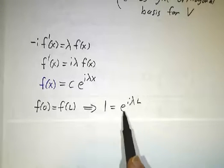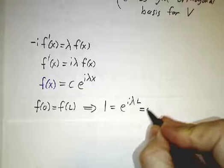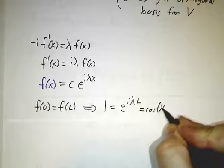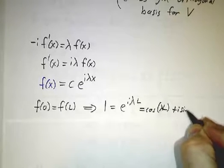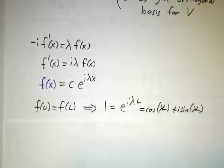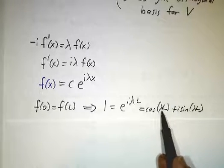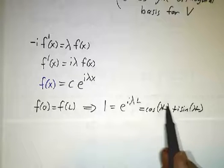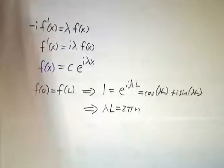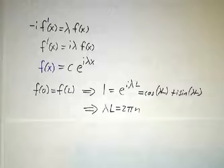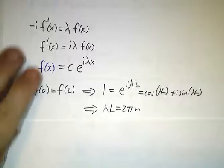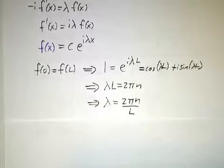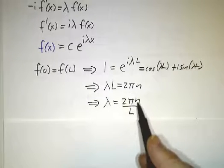But we know that e to the i lambda L is cos lambda L plus i sin lambda L, and that's 1 precisely when the cos is 1 and the sin is 0. In other words, when lambda L is a multiple of 2π. So lambda L has to be a multiple of 2π, which means that lambda has to be a multiple of 2π over L.